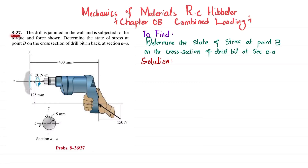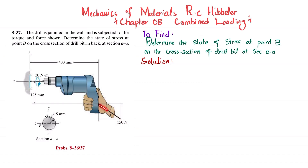Welcome back. Problem 8-37: the drill is jammed in the wall and is subjected to a torque and force as shown. Determine the state of stress at point B on the cross section of the drill bit at section AA. This is the drilling machine and this is the drill bit which is jammed in the wall. The force exerted on the drill machine is 150 newtons at a certain angle, and all dimensions are given. We have to find the state of stress at point B.